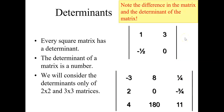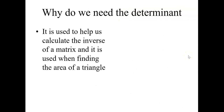Note the difference between a matrix and a determinant. For a matrix, the symbol is a square bracket, but for a determinant it is just a vertical straight line. Why do we need the determinant? The determinant is used to help us calculate the inverse of a matrix and it is used when finding the area of a triangle.